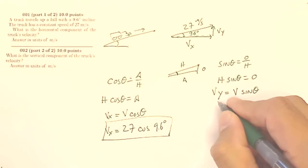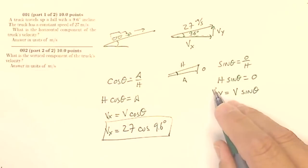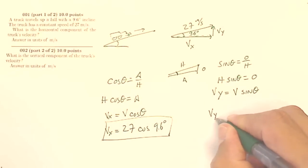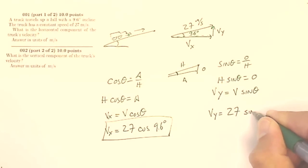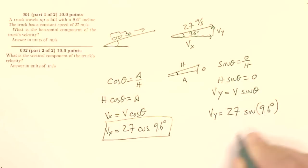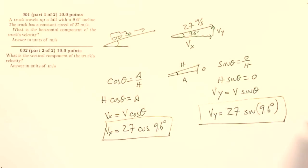My vertical velocity — the vertical component of the truck's velocity — is my velocity in the y direction. So my velocity in the y direction is going to be 27 meters per second times the sine of 9.6 degrees, and that gives me my vertical component of the truck's velocity. Make sure your calculator is in degrees in order to get these answers right.